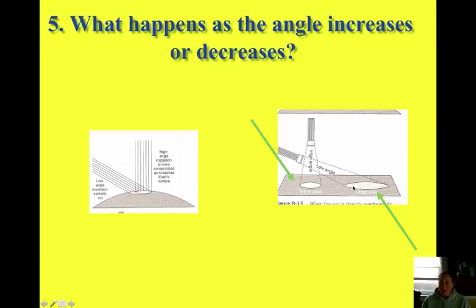So what happens as this angle of insulation increases or decreases? If we use a flashlight, which we'll be using in class to demonstrate what happens, and you shine this flashlight directly down at the surface, you're concentrating all of this energy, the same light from the bulb is affecting this area in a much smaller location. If you take your flashlight and slant it, the same amount of energy is coming from the flashlight bulb but over a wider area. So it's spreading that same energy out over a wider area. So which area would heat up more quickly?